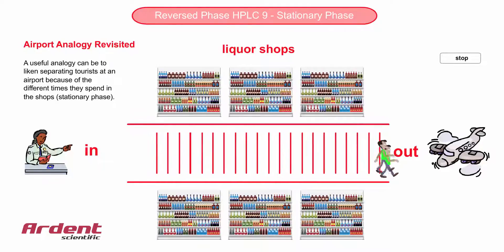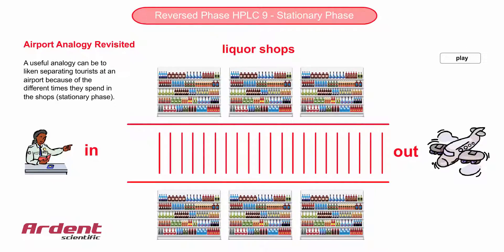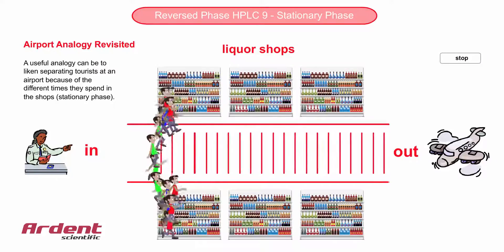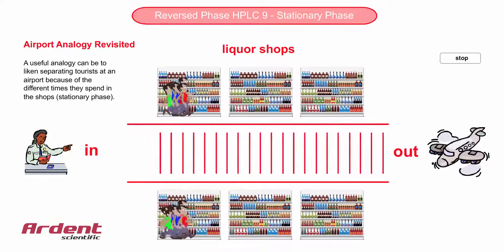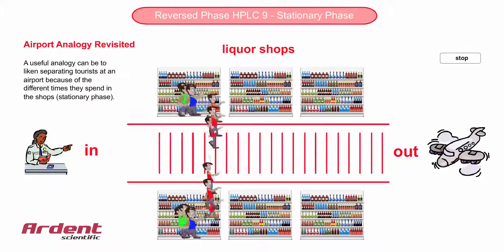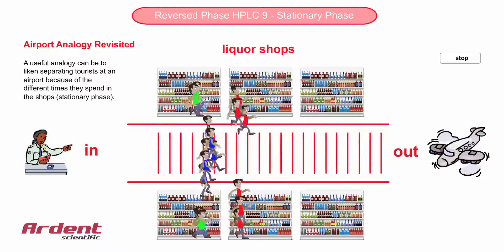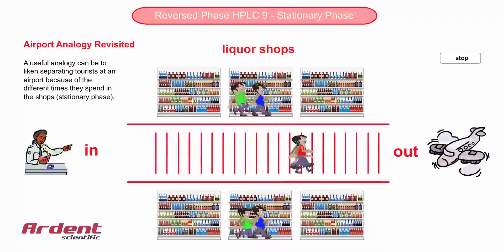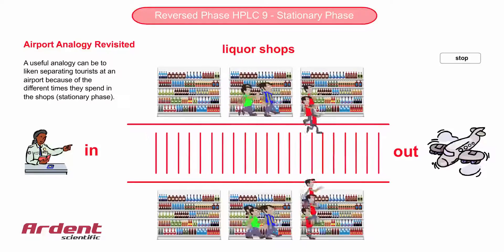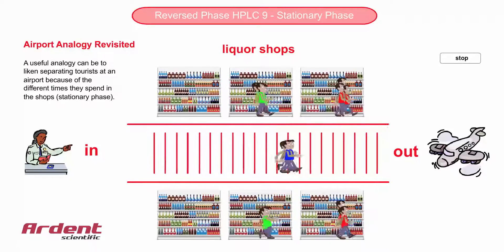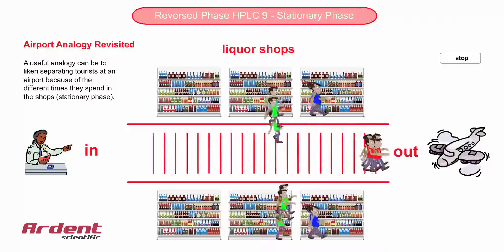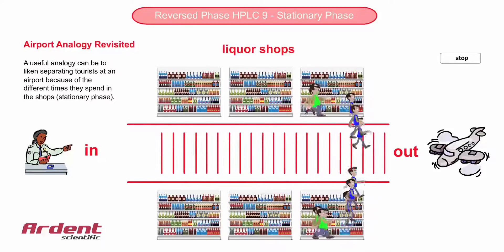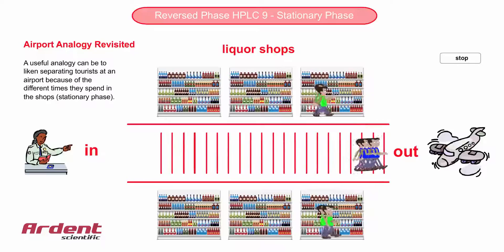The red tourists do not really like shopping that much and only spend a short time in the shops. The green tourists, however, love shopping and spend heaps of time in the shops. The blue tourists are somewhere between the red and the green. Because of the different amounts of time each of the tourists spend in the shops, the three groups exit the moving walkway at different times and are separated.